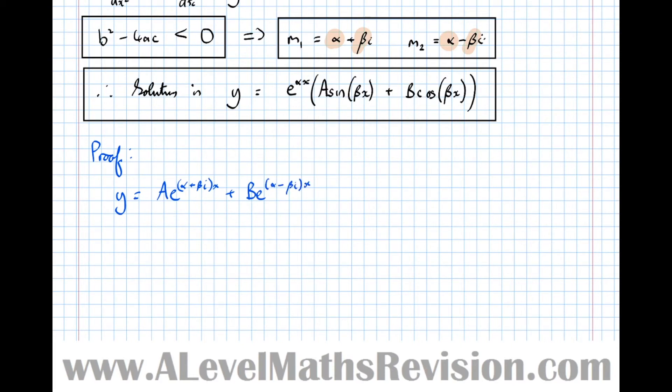Plus Be^((α-βi)x). And what we're going to do now, we're going to try and rearrange this here into that form there. So equals Ae^(αx)e^(βix) + Be^(αx)e^(-βix). Now notice that this here e^(βix) and this here e^(-βix) are both complex numbers in exponential form.